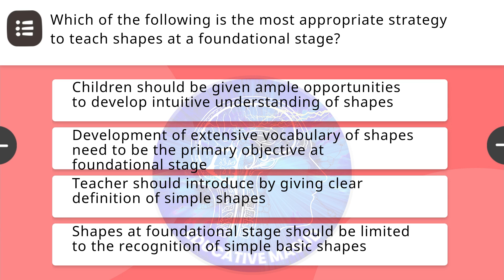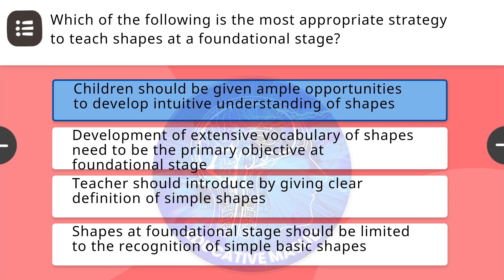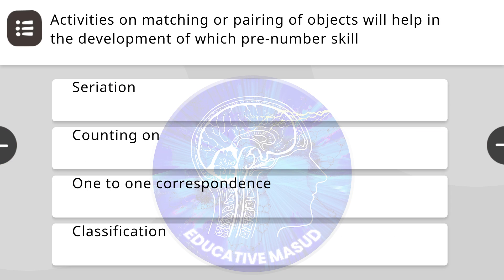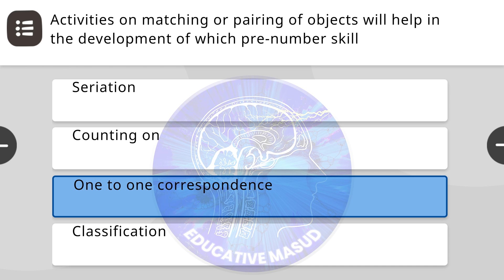Next question: which of the following is the most appropriate strategy to teach shapes at the foundational stage? Correct answer is children should be given ample opportunities to develop intuitive understanding of shapes. Next question: activities on matching or pairing of objects will help in the development of which pre-number scheme? Correct answer is 1-to-1 correspondence.